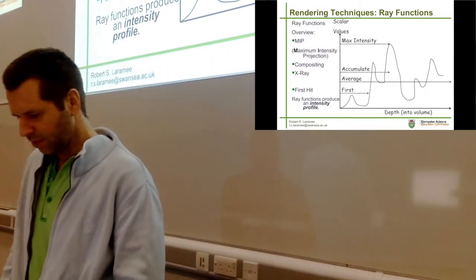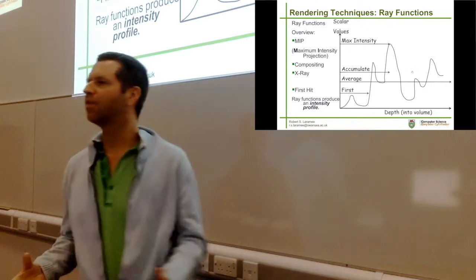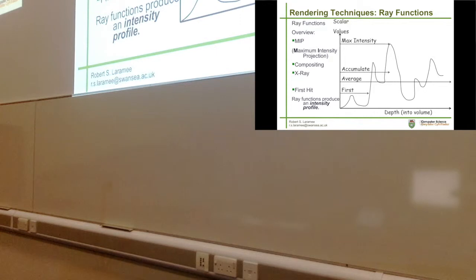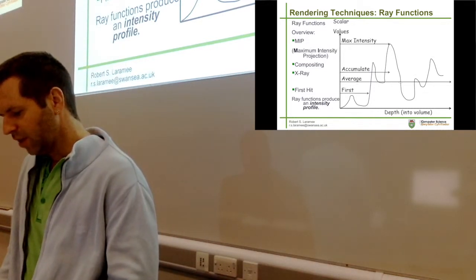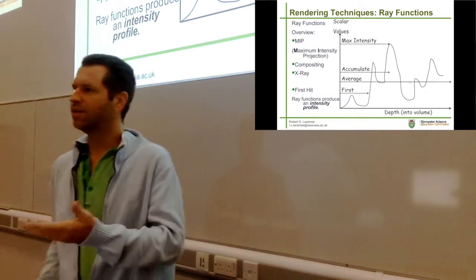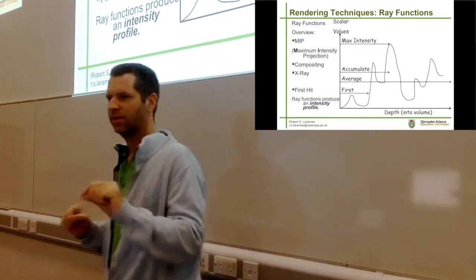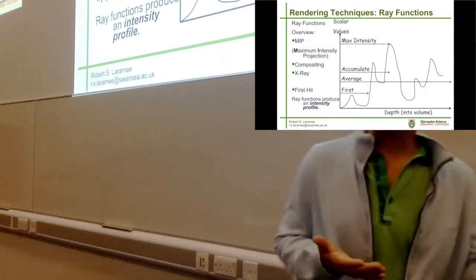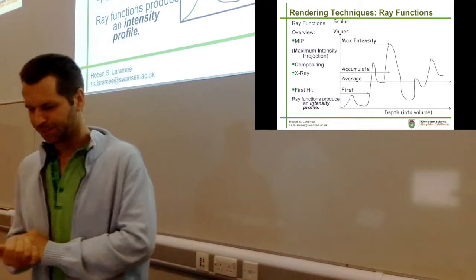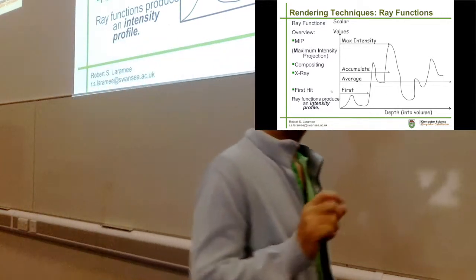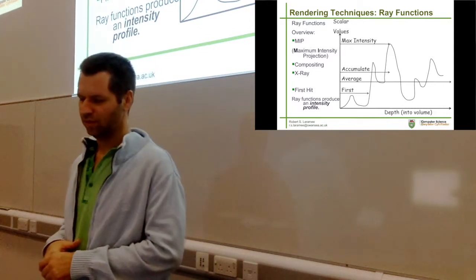Another one is compositing - we add all the values we encounter up and return that. Another one is called x-ray or average: adding up all the values encountered along the ray in the 3D volume and then normalizing it - averaging by dividing by the number of samples. So if we take 10 data samples, we divide by 10. Another option is called first hit, meaning return the first data sample that is non-zero when the ray is cast into the volume. So those are four different options.